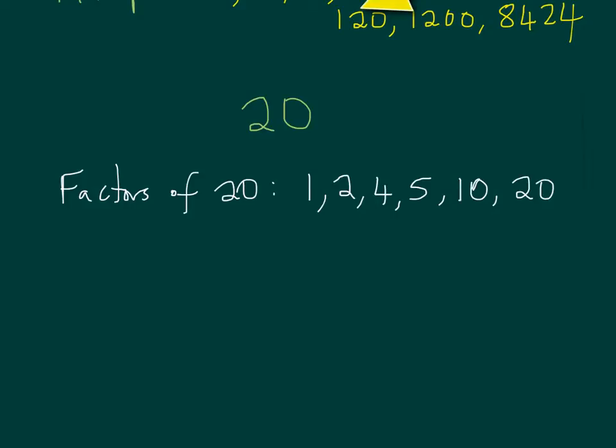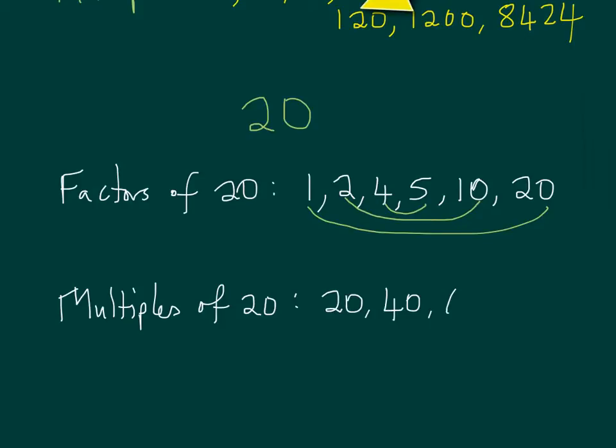And let's just check that. 1 times 20. 20. 2 times 10. And 4 times 5. Yep. 20. Okay. What about multiples? So here, a question may ask for any 5 multiples of 20. Well, I can always start with 20, and then I'm just going to write out the 20 times table. 40, 60, 80, 100, dot, dot, dot. It shows it goes on forever.